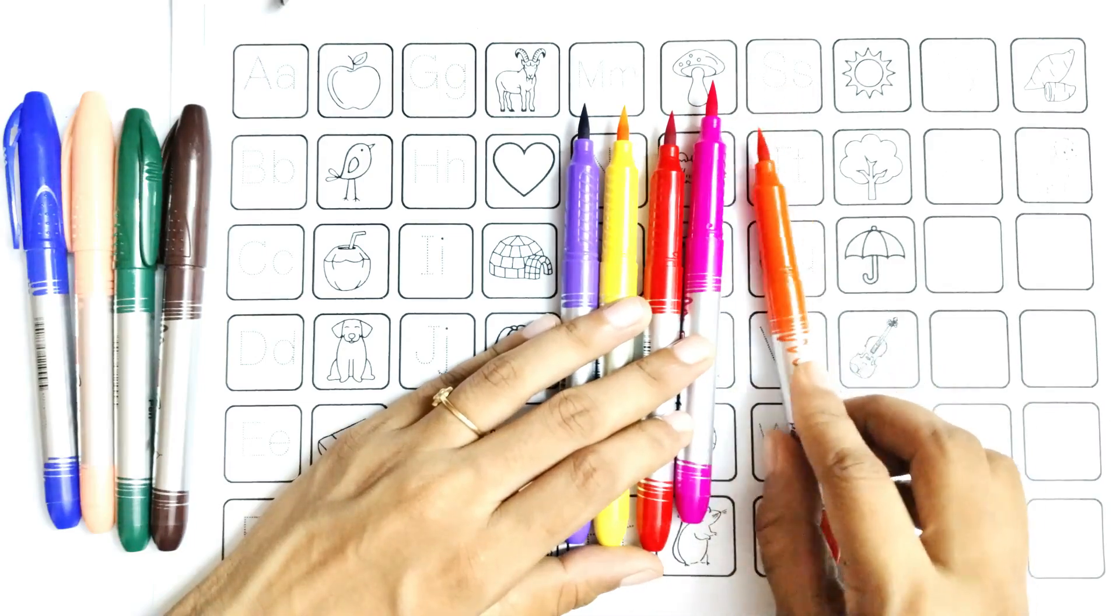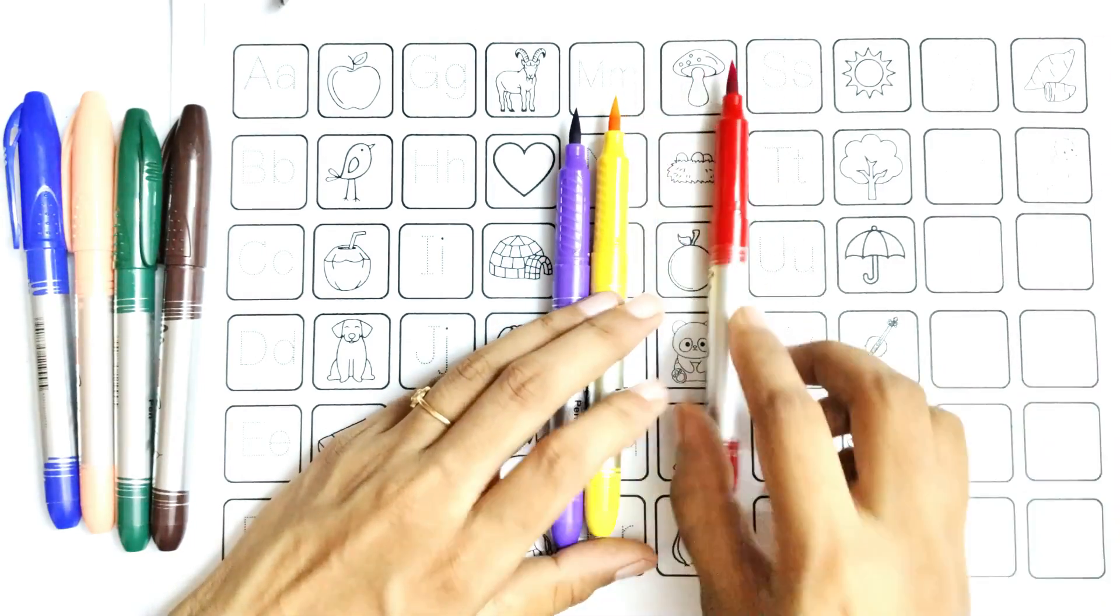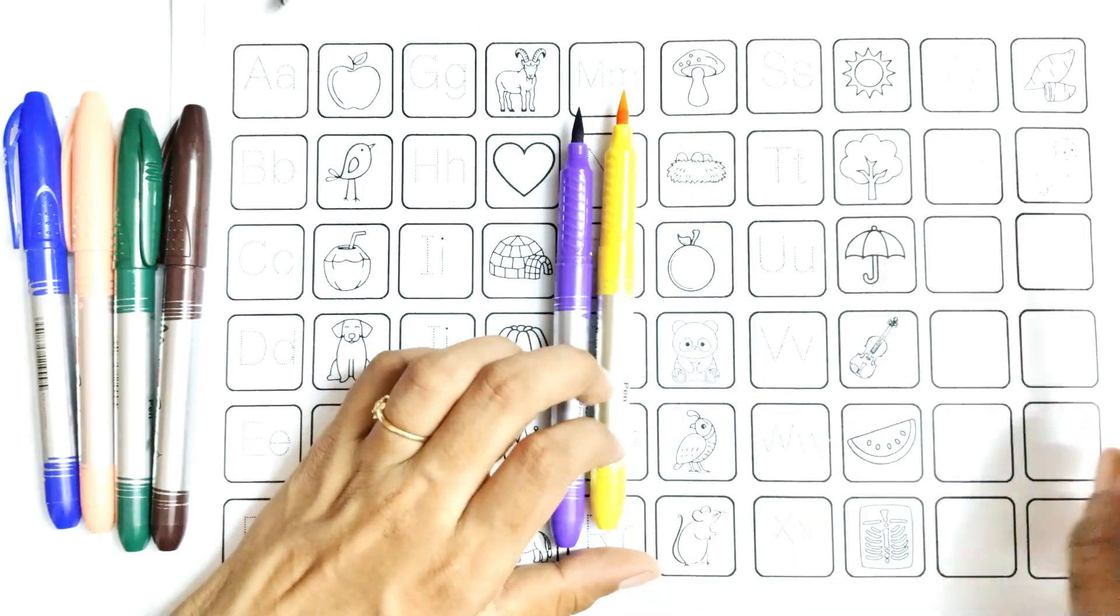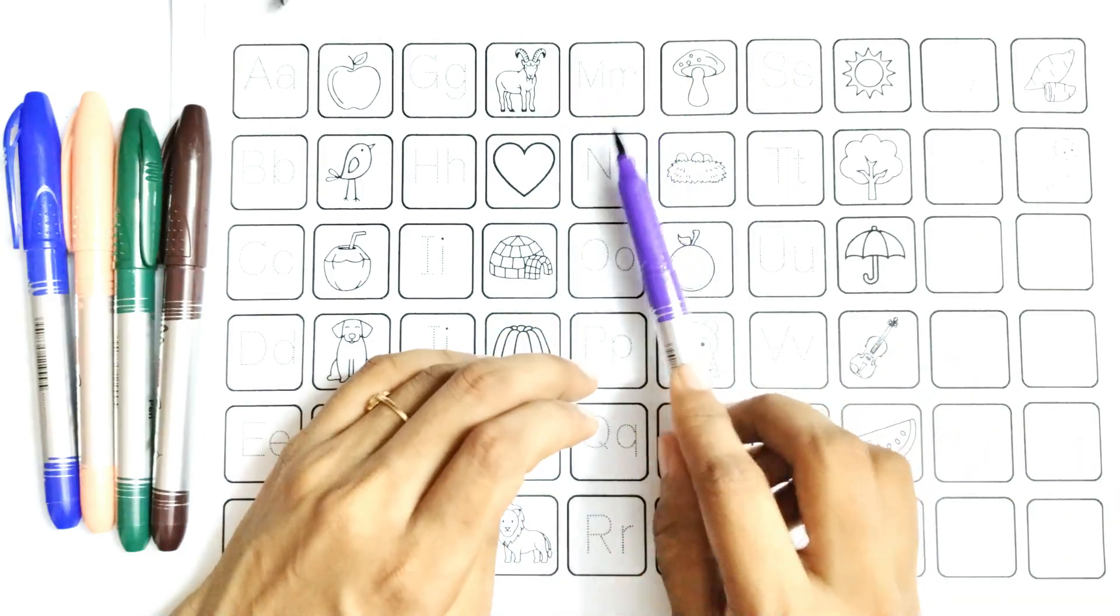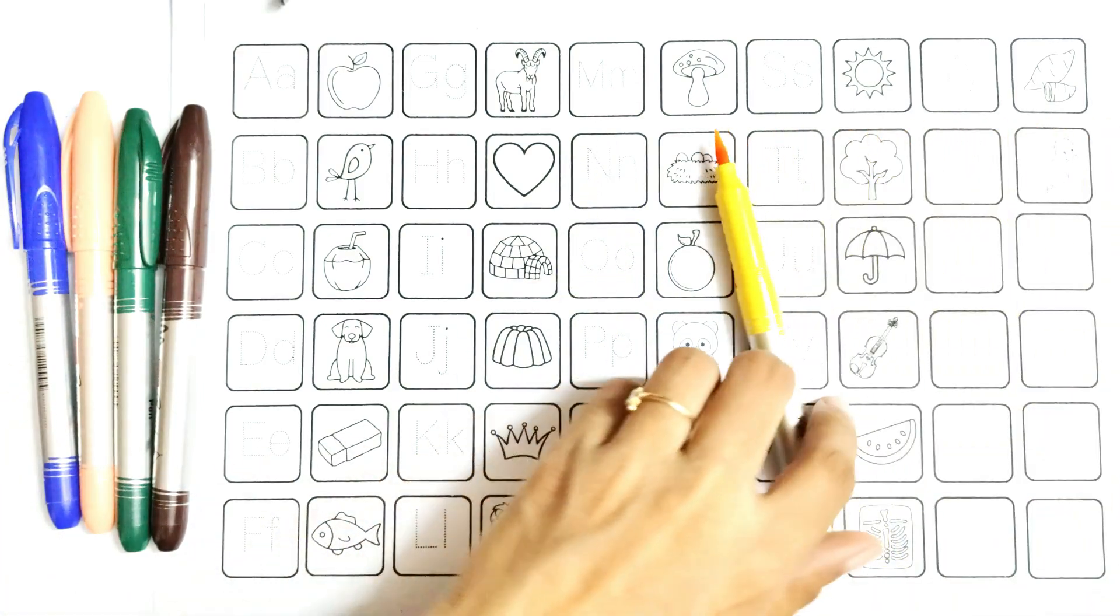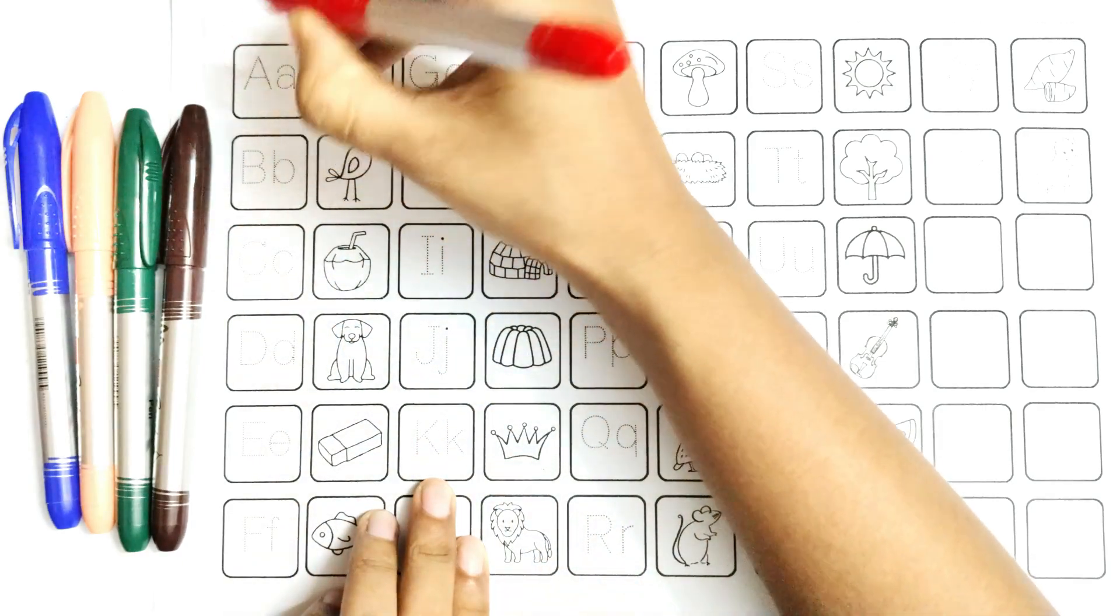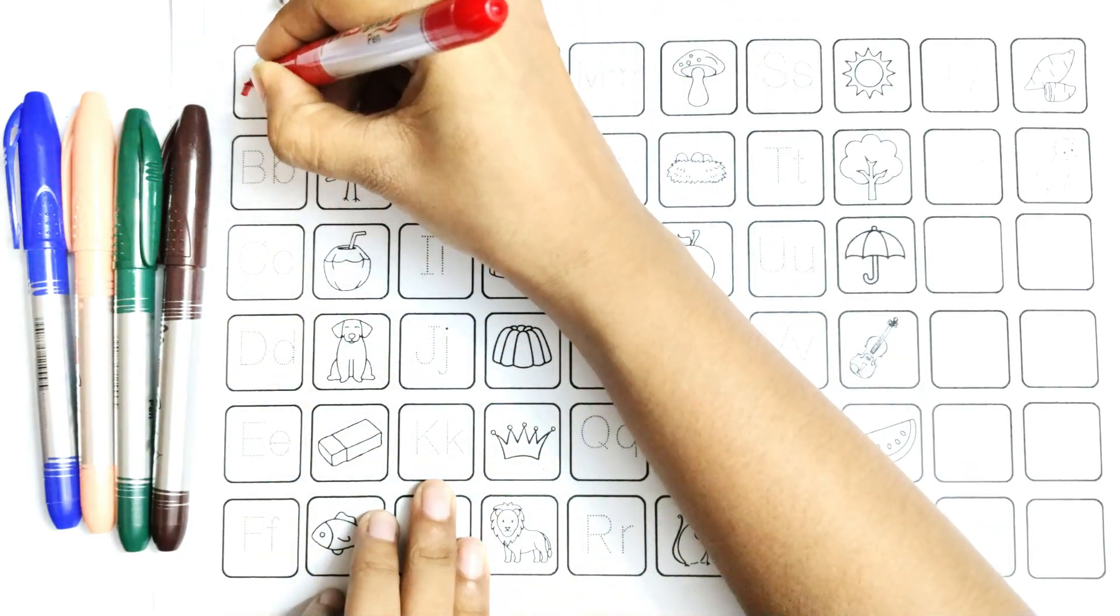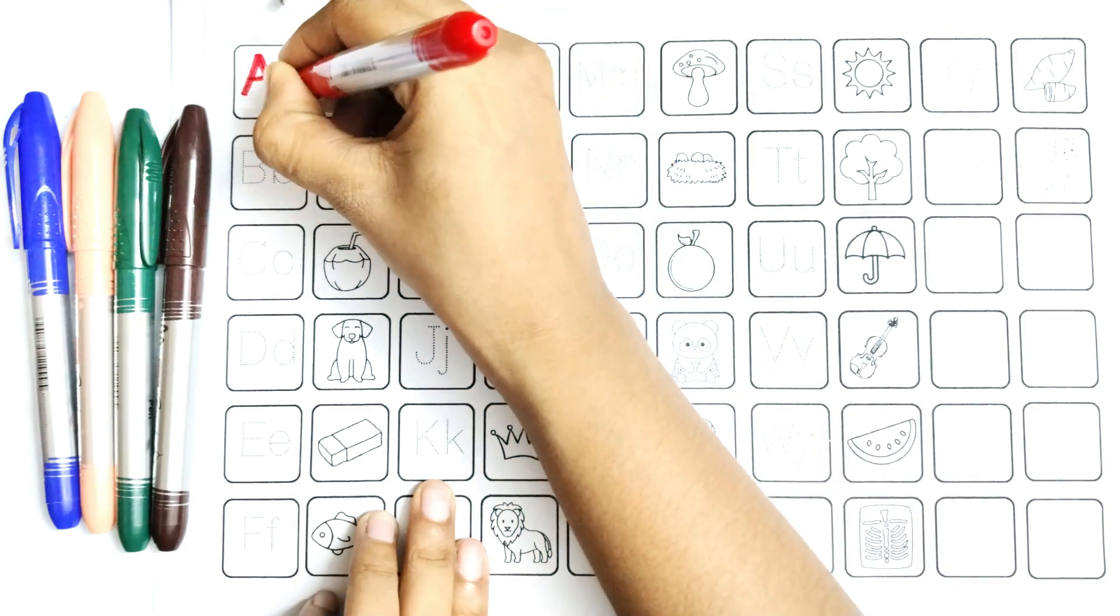Write with me uppercase letter and lowercase letter. Say with me: A is for apple.